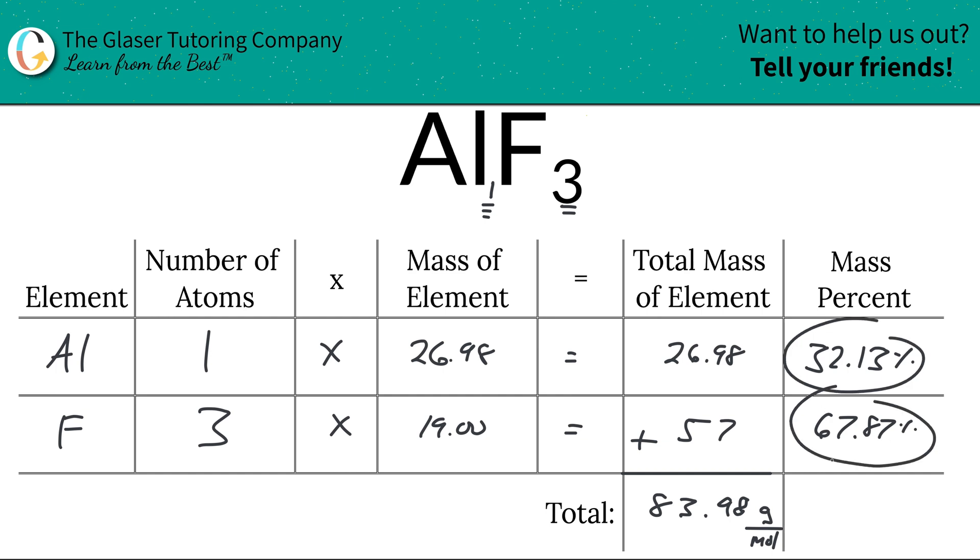Now the percentages in the entire compound should always add up to 100, so that's a good check for yourself. So what you can now do is add these rows in the column together, and it would equal 100, so I'm pretty sure we're good.